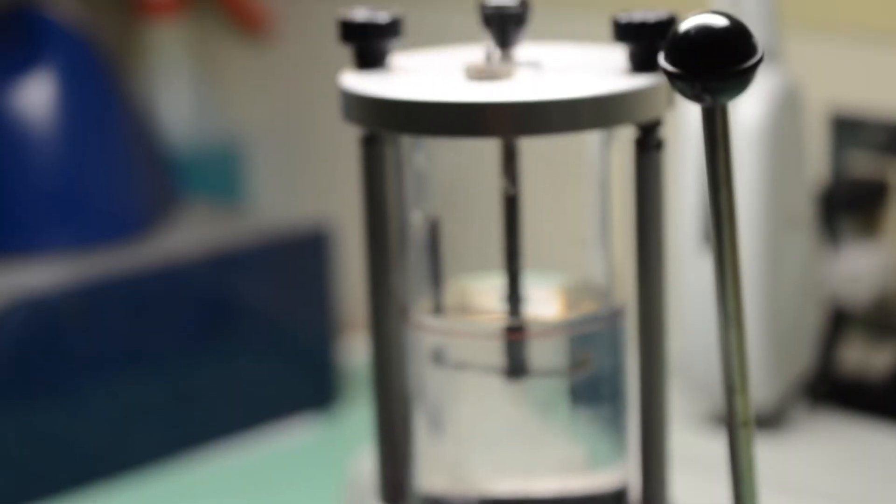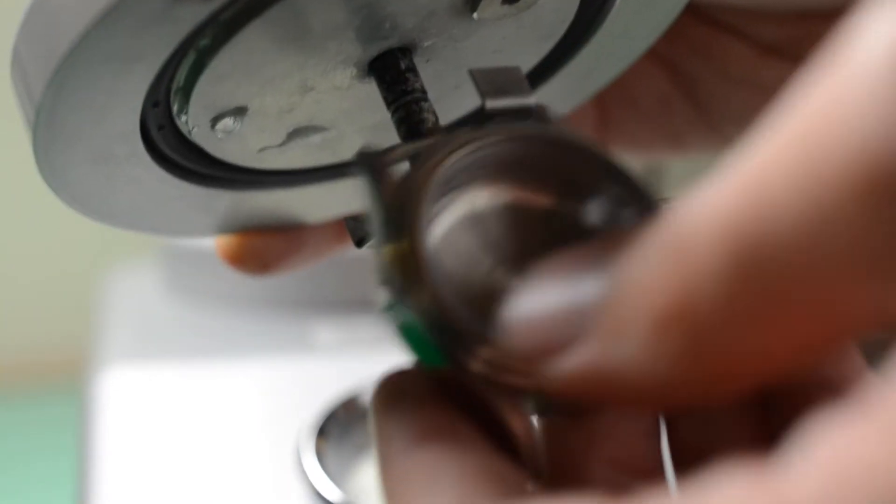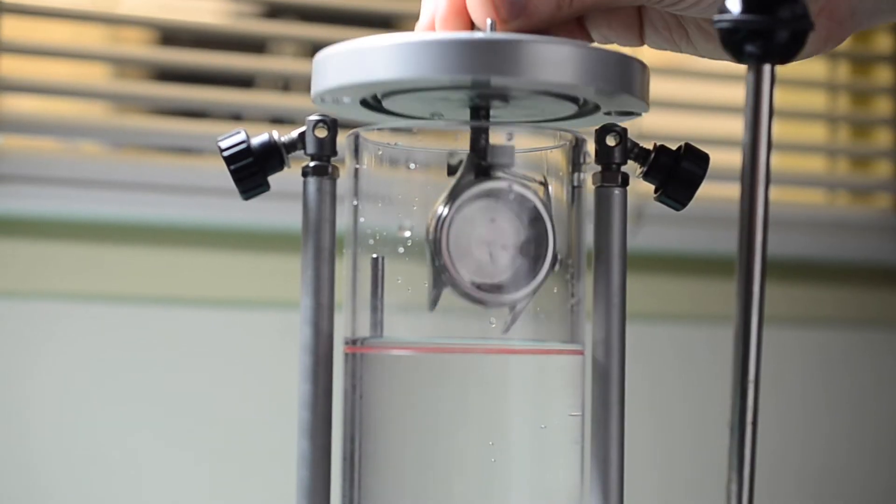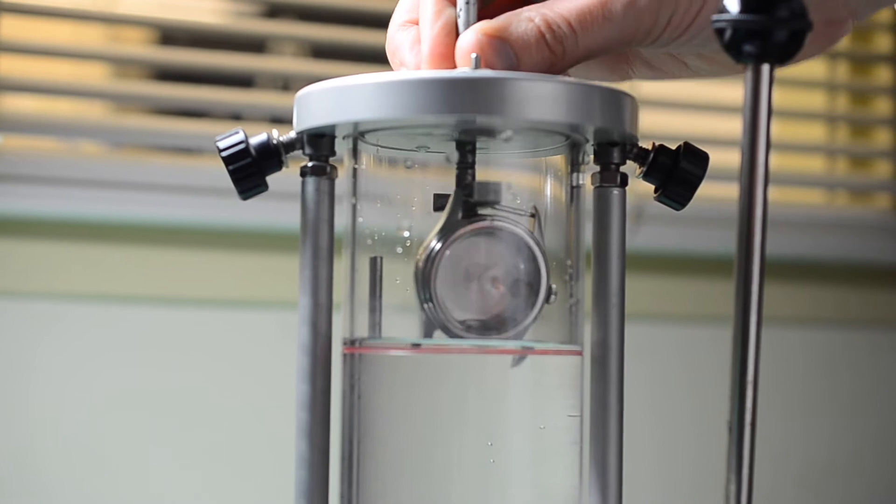To begin, the watchmaker places the case on the telescoping rack. Then place the lid on the chamber and tighten thumb screws evenly.